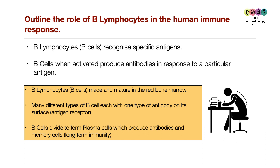B lymphocytes are made and mature in the bone marrow. There are many different types of B cell, each with one type of antibody on its surface, sometimes called an antigen receptor. B cells divide to form plasma cells when activated, which produce antibodies. Memory B cells are also produced, conferring long-term immunity.